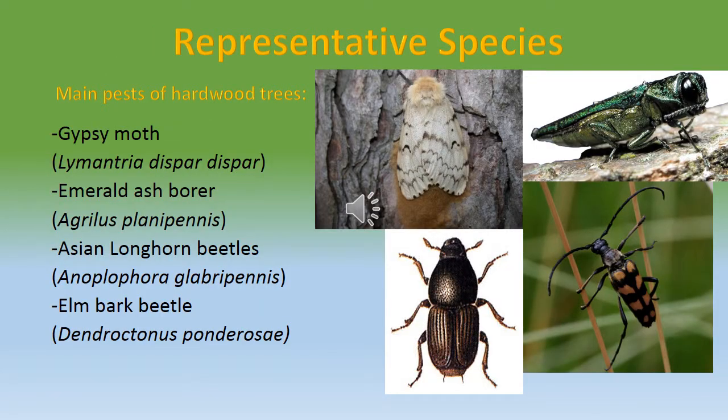Some of the representative species or main pests of hardwood trees are the gypsy moth (Lymantria dispar dispar), the emerald ash borer (Agrilus planipennis), the Asian longhorn beetle (Anoplophora glabripennis), and the elm bark beetle (Dendroctonus ponderosae).